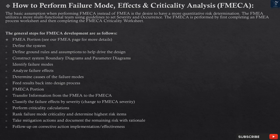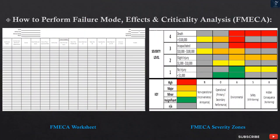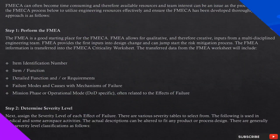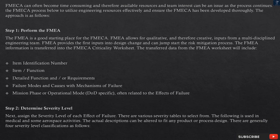Follow up on corrective action implementation/effectiveness. FMECA can often become time-consuming and therefore available resources and team interest can be an issue as the process continues. The approach is as follows. Step 1: Perform the FMEA. The FMEA is a good starting place for the FMECA. FMEA allows for qualitative, and therefore creative, inputs from a multi-disciplined engineering team. FMEA provides the first inputs into design change and can jump-start the risk mitigation process. The FMEA information is transferred into the FMECA criticality worksheet.